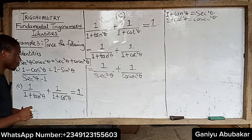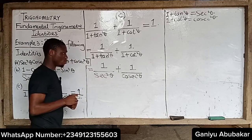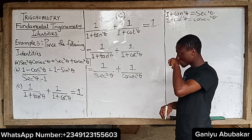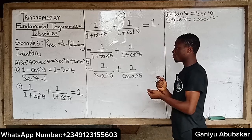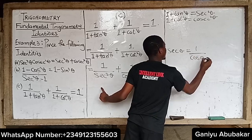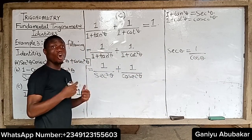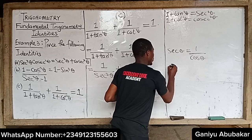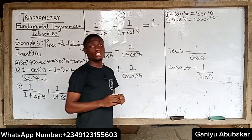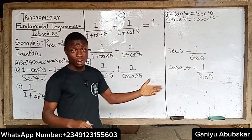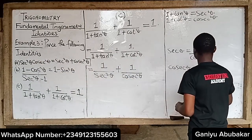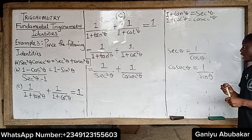At this point, what's the next task? We know something important. We know that sec theta equals one over cos theta, and we also know that cosec theta equals one over sin theta. These are the two expressions we discussed in our last class.